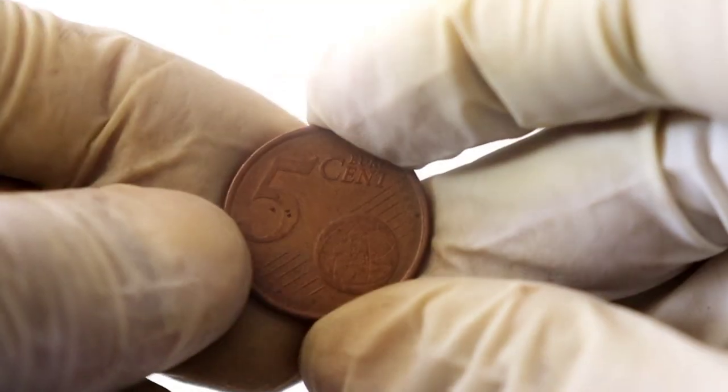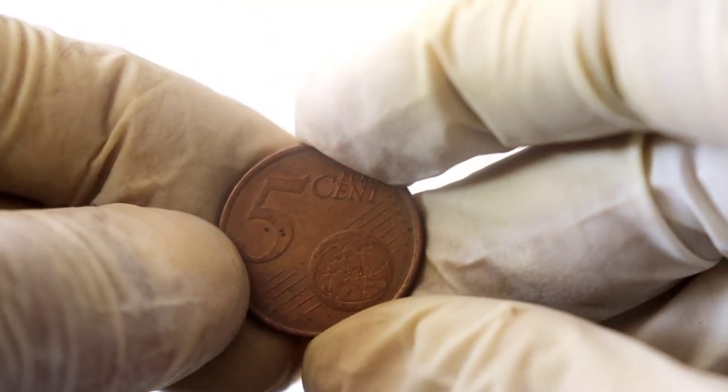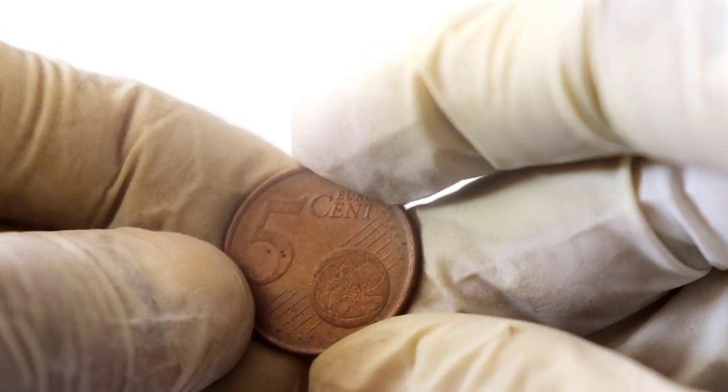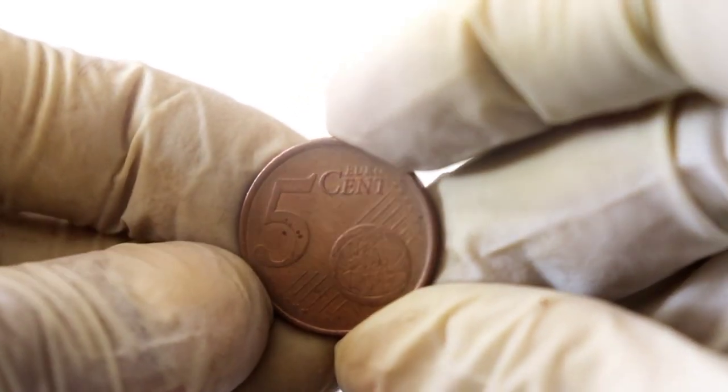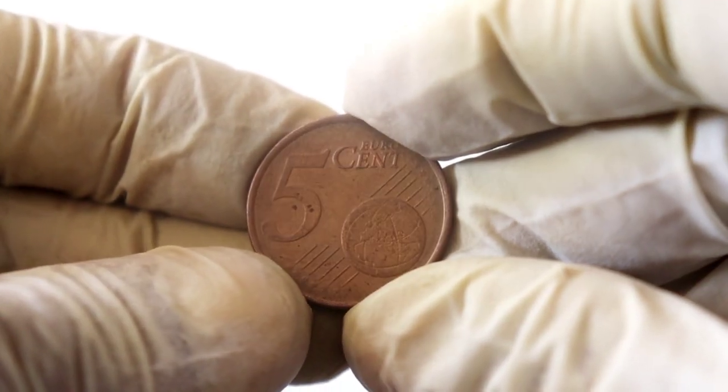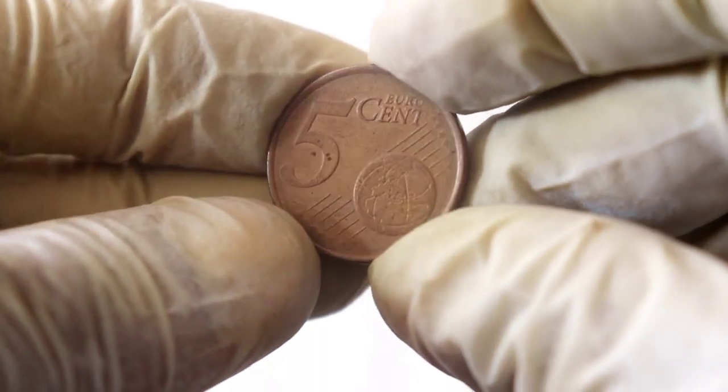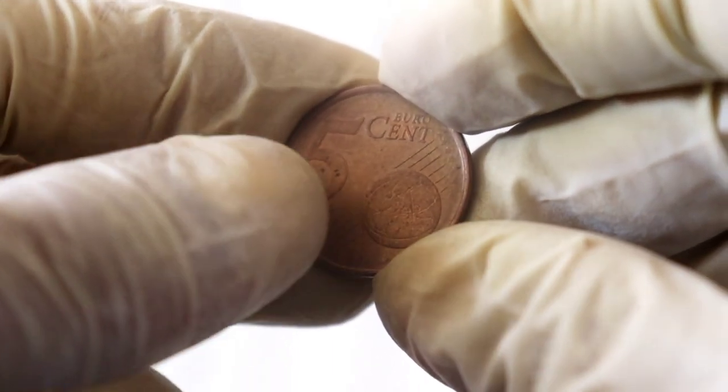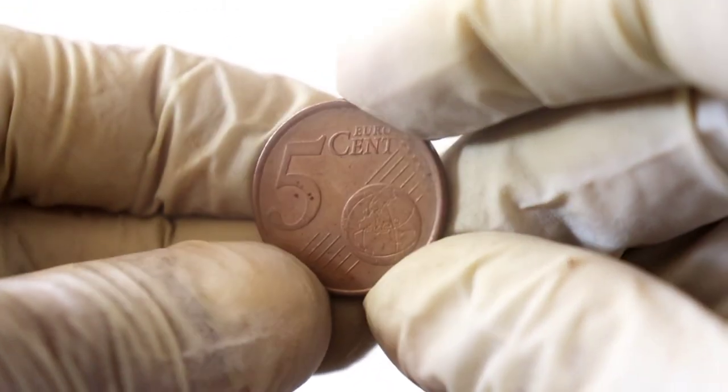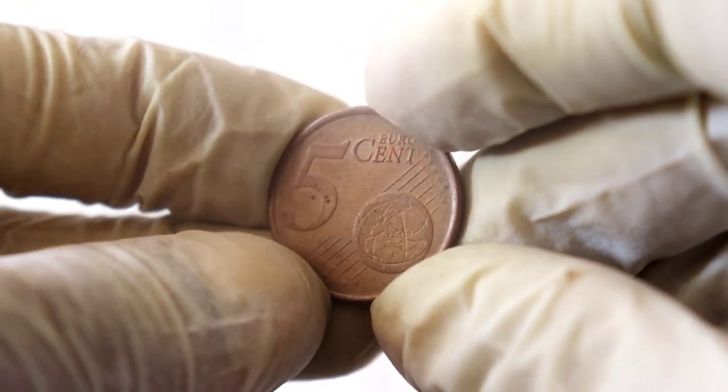If you're interested in finding valuable variations of the 5 Eurocent 2002 coin, keep an eye out for double strikes, die cracks, or off-center strikes. These intriguing features can make a seemingly ordinary coin extraordinary.